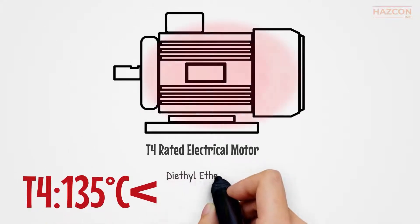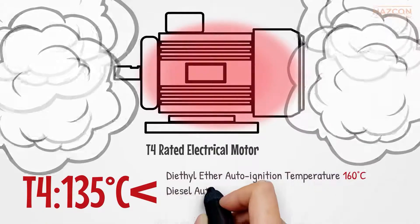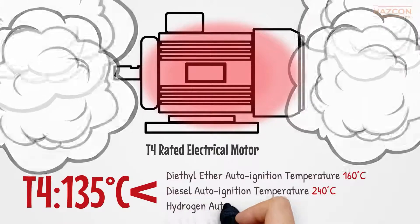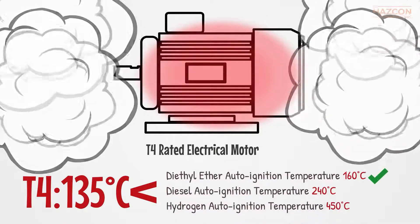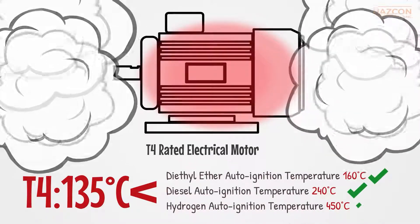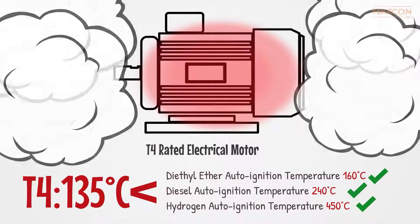Now this T4 rated electrical motor can be safely installed in an area when diethyl ether, diesel, or hydrogen are present because the minimum ignition temperature of these gases is higher than maximum surface temperature rise of our T4 motor.